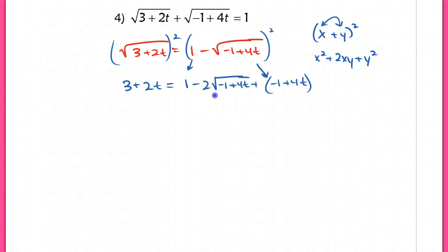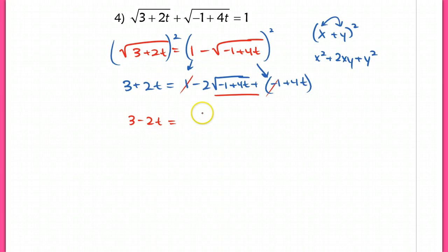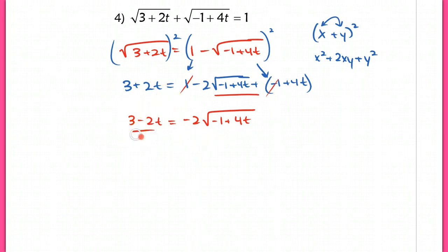Now I'm going to try to isolate this radical again. I can subtract this whole term to the other side, or split it up and start to simplify. The 1 and the negative 1 are going to cancel. If I bring that over, I'm left with 3 minus 2t equaling negative 2 times the radical of (negative 1 plus 4t). At this point, you could divide out negative 2, but then you'd end up with a fraction. So I'm just going to go ahead and square both sides. When I square both sides, the right-hand side becomes positive 4 times (negative 1 plus 4t).